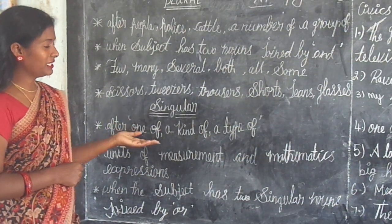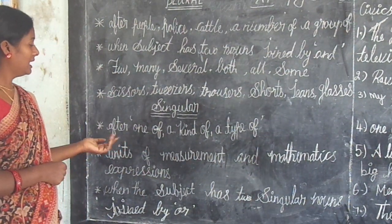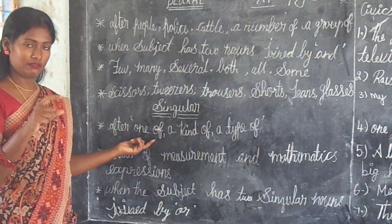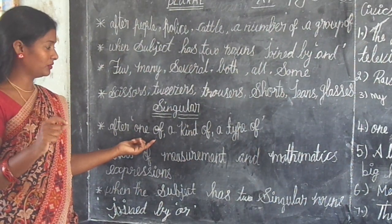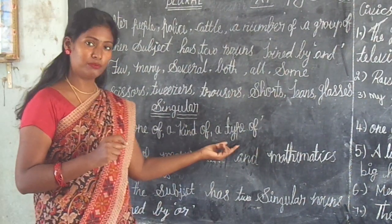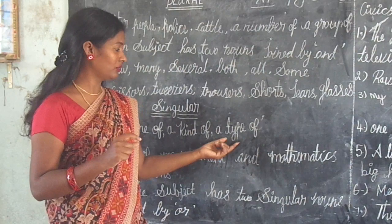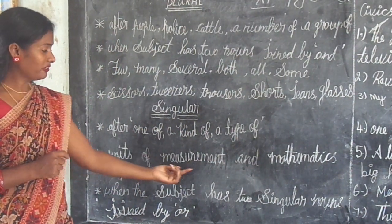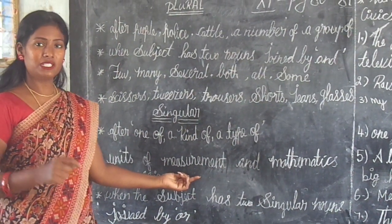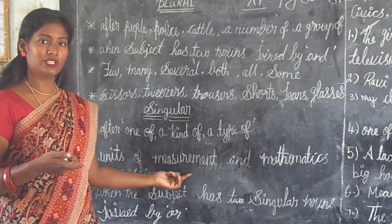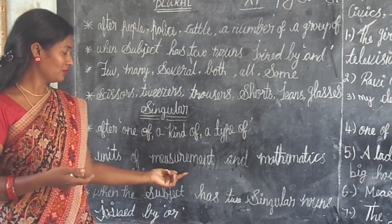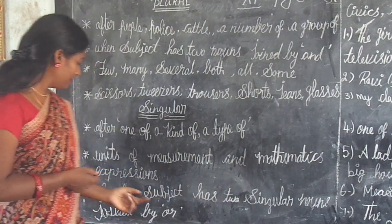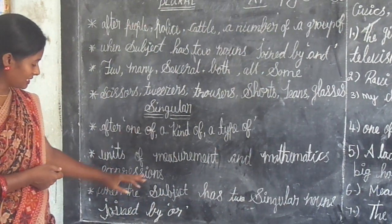The last word takes a singular verb. Phrases like 'a kind of' and 'a type of' are considered singular. Units of measurement such as centimeters, meters, and liters are all singular. Mathematical expressions are also singular.